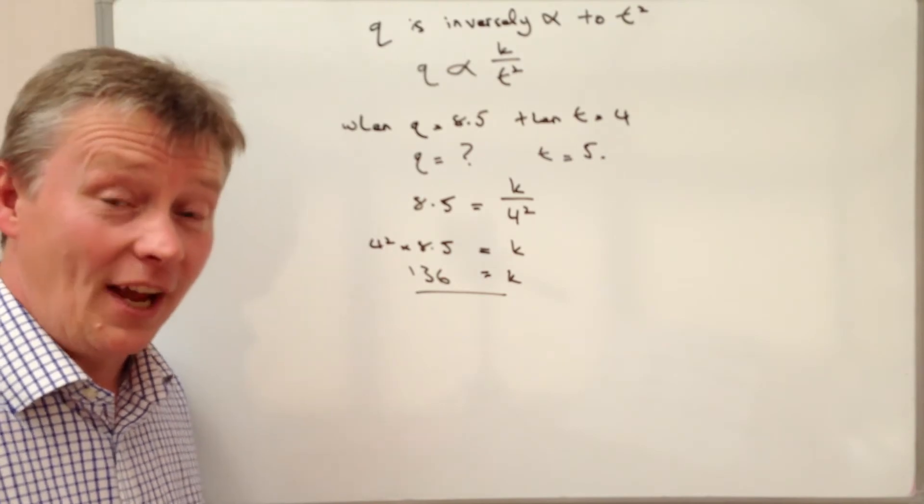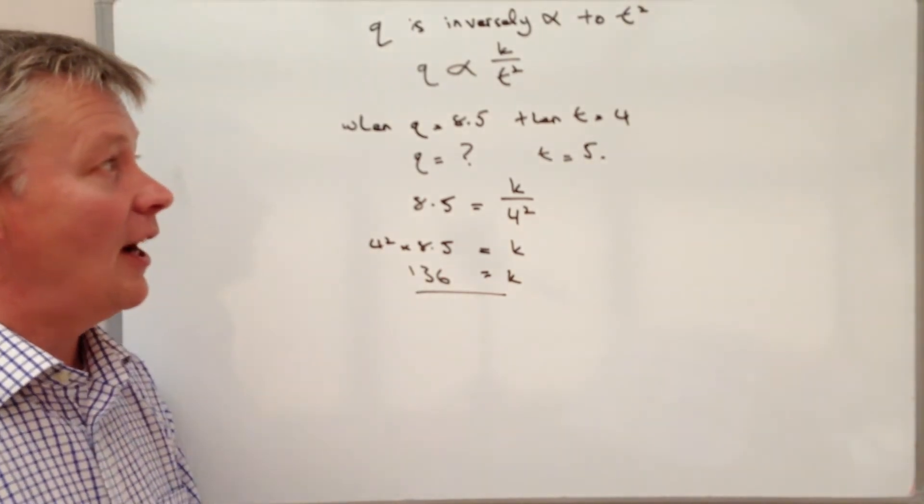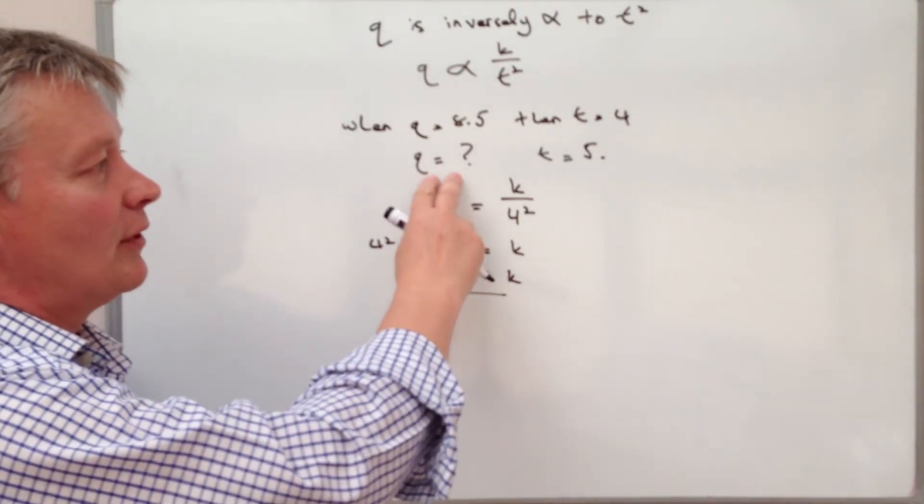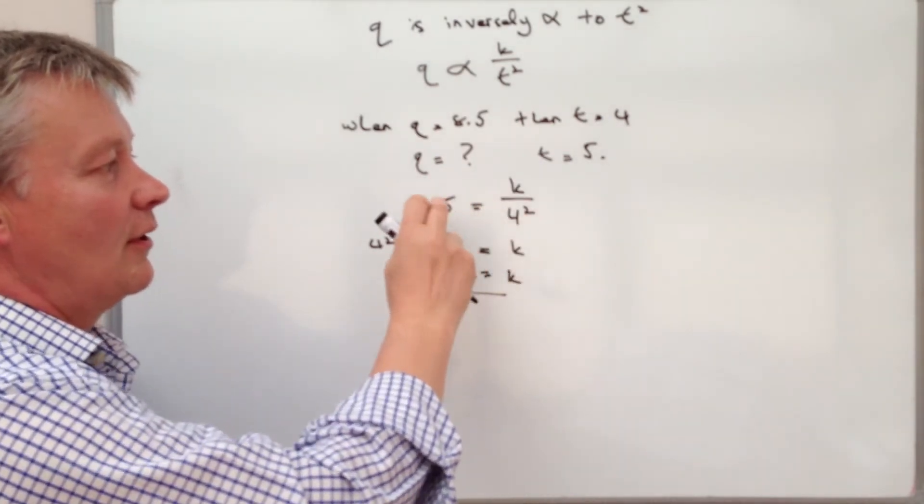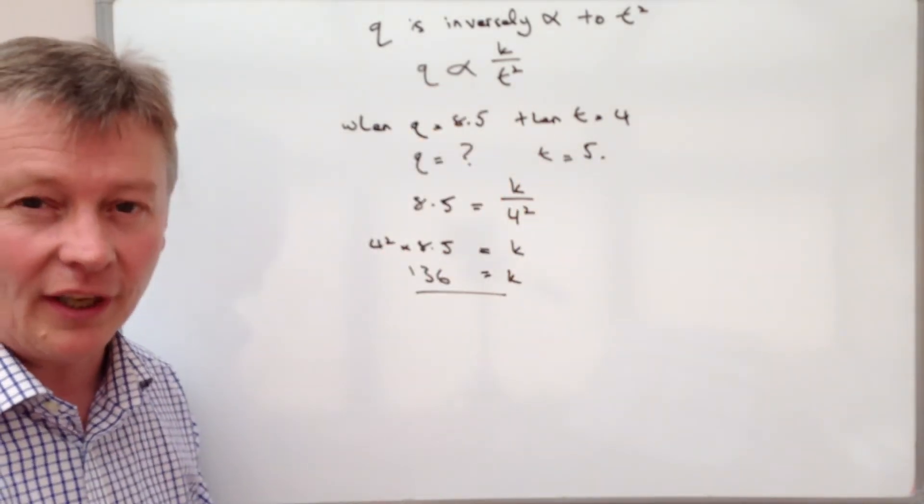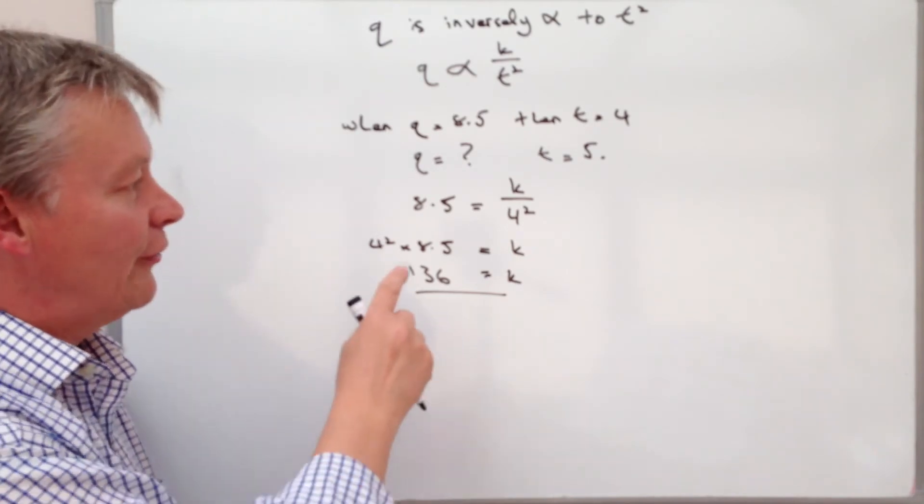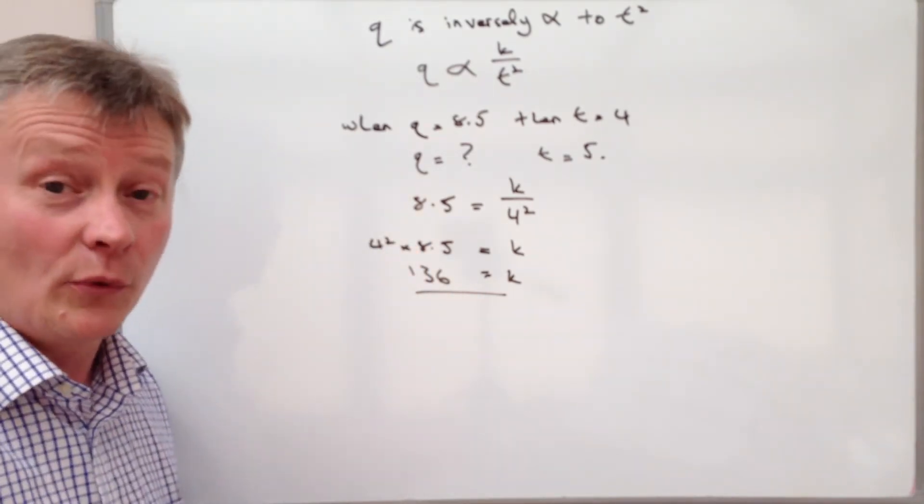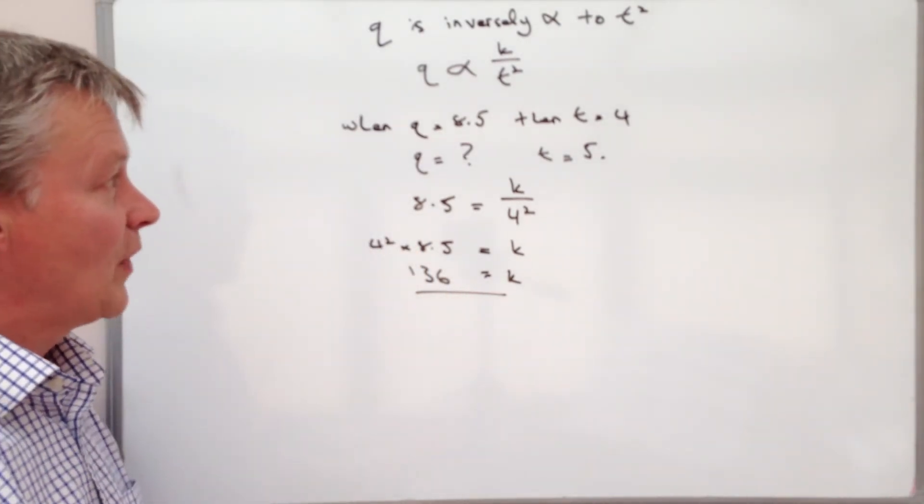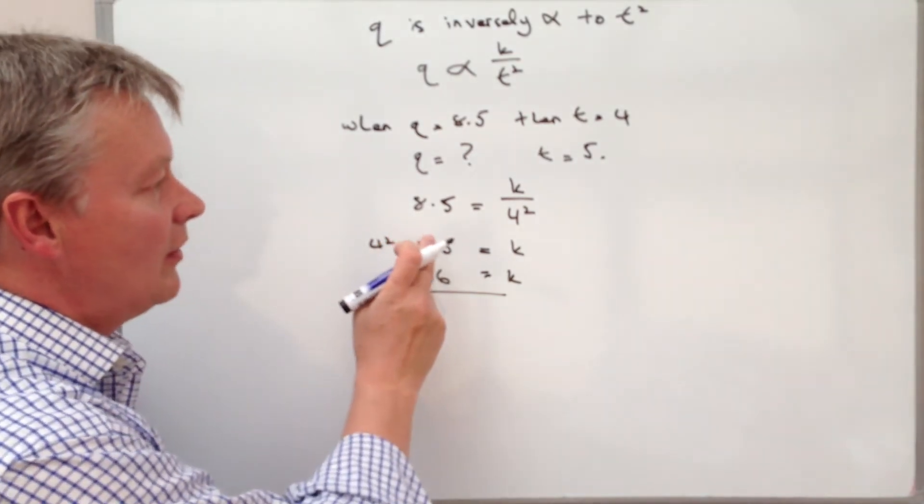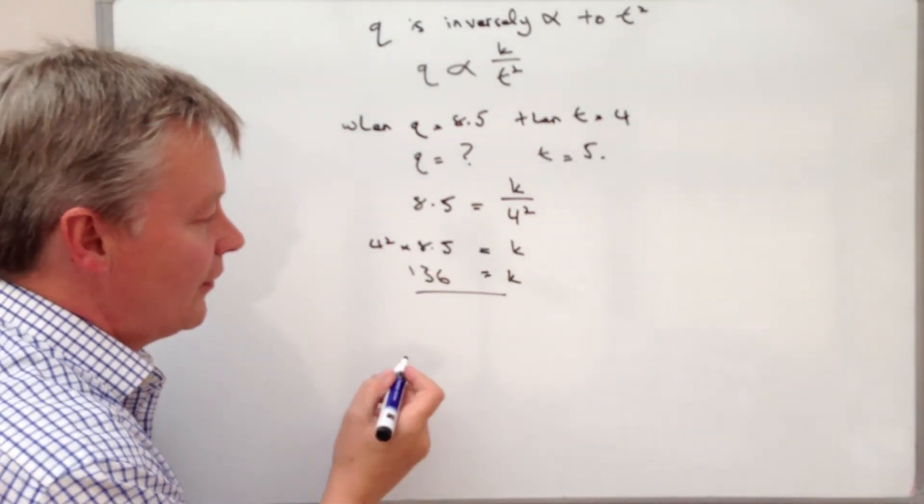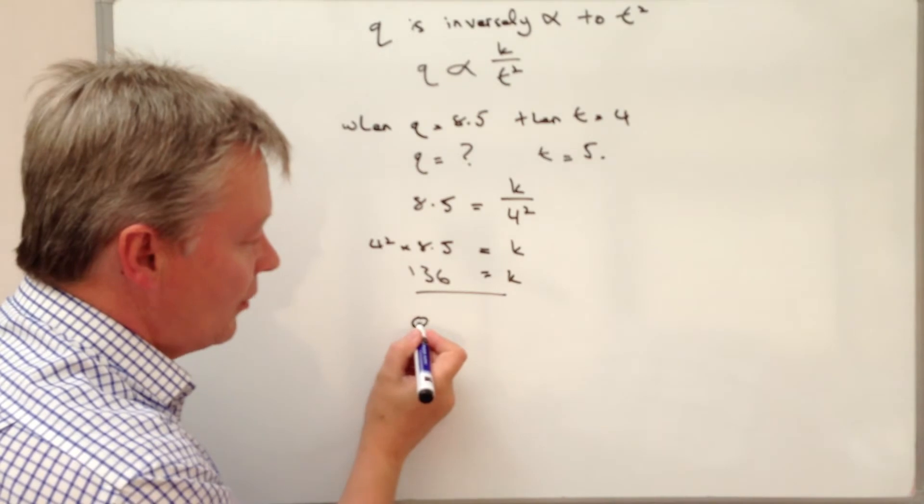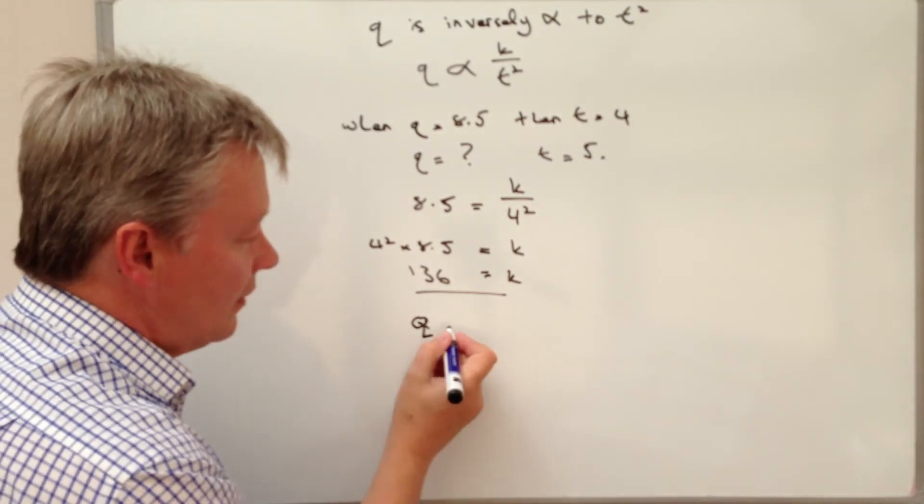What that means now is we can use that value and put these numbers or this unknown and this number into the formula, and that will allow us to work out the final part of the question which is the value of Q. So Q is equal to K over T squared.